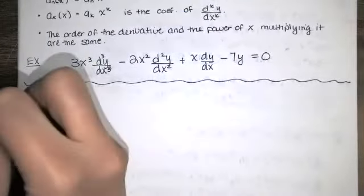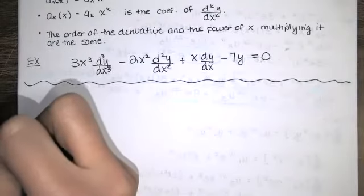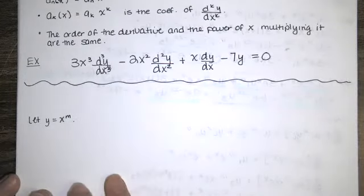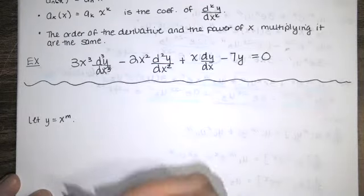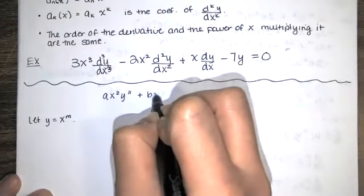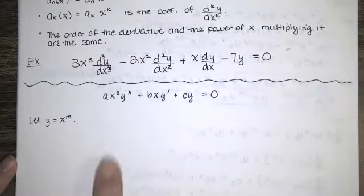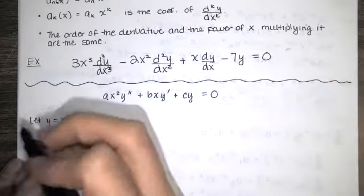Something very similar happens with Cauchy-Euler differential equations. To solve one of these, you are going to let y equal x to the m. I'll demonstrate this for a general second-order differential equation. So let's say you've got a times x squared times y double prime plus b times x times y prime plus c times y equals 0. It's Cauchy-Euler because the order of the derivative and the power of x match for every term, and the right-hand side is 0, so it's homogeneous.